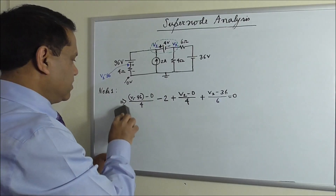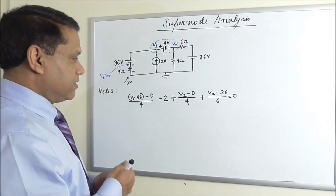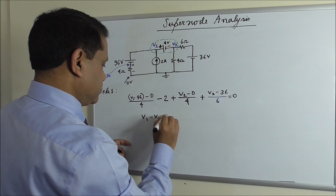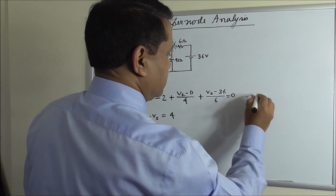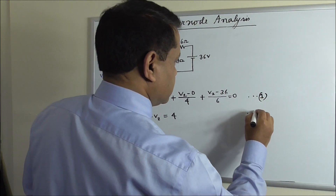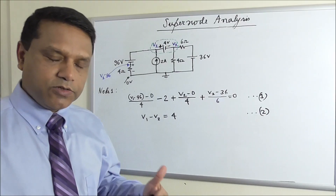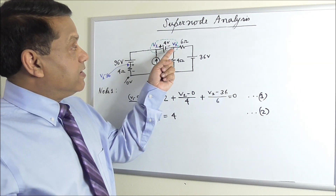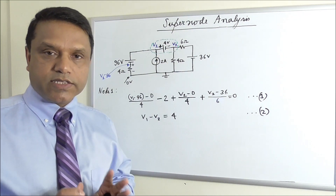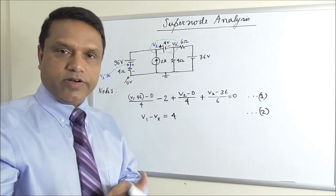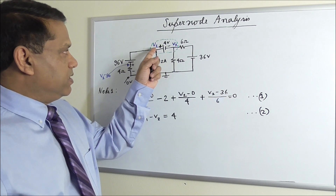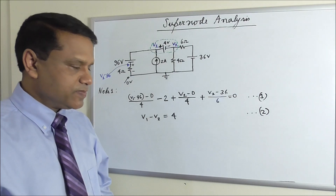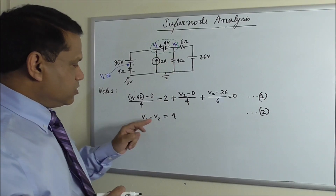We need a second equation, and we get it from the voltage source itself. The 4 volt source tells us that V1 is higher than V2 by 4 volts, so V1 minus V2 equals 4. A common mistake is thinking V1 equals 4 volt, or V2 equals minus 4. Those are wrong. The voltage source does not set the absolute value of a node voltage — it only increases or decreases relative voltage. So the correct second equation is V1 minus V2 equals 4. We now substitute V1 equals V2 plus 4 into the KCL equation to solve.